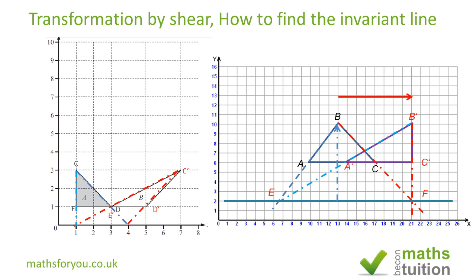From C to C prime is 4 units, and from the invariant line to C prime is also 4 units. If you divide 4 by 4, we get 1, so this confirms that the shear factor is also 1.